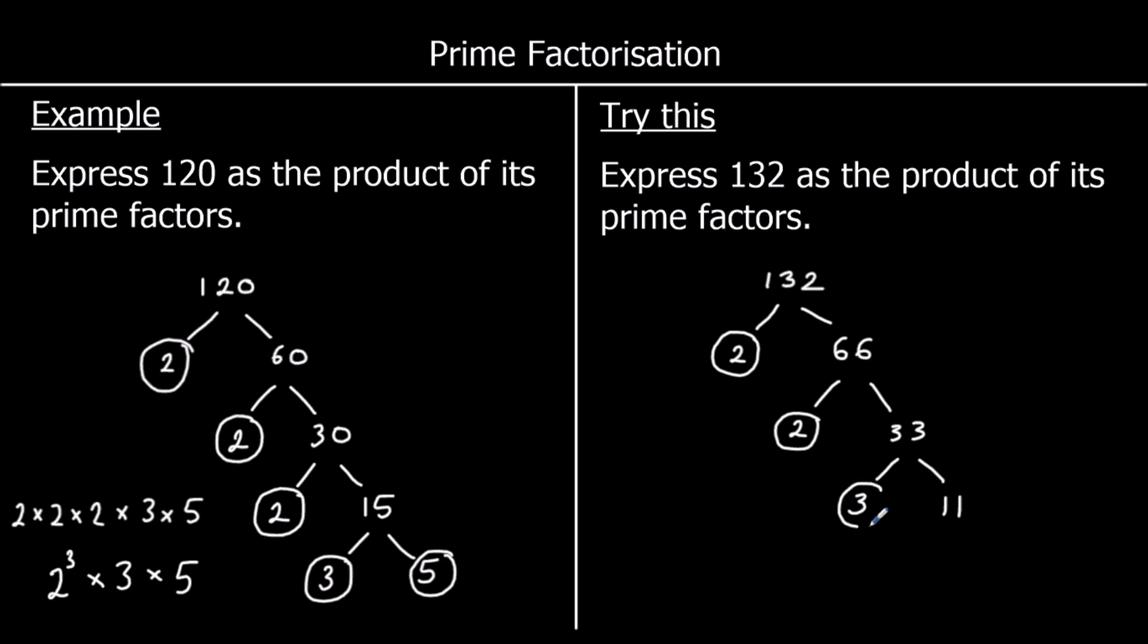And both of those are prime numbers. So 132 can be written as 2 times 2 times 3 times 11, or we could write that as 2 squared times 3 times 11.